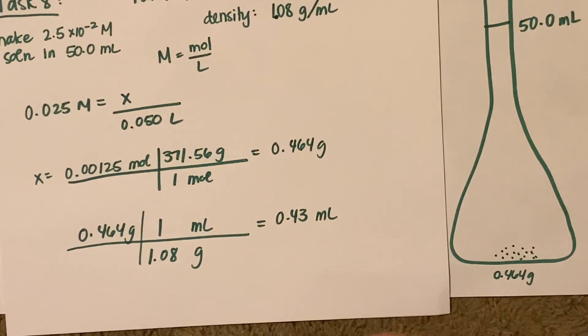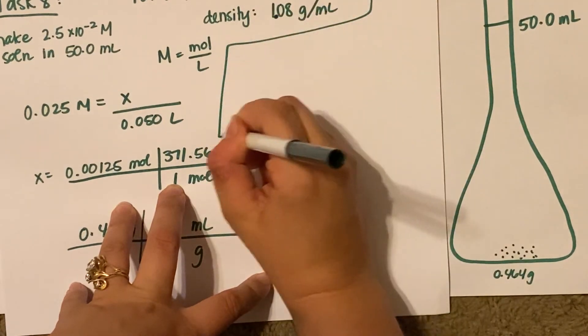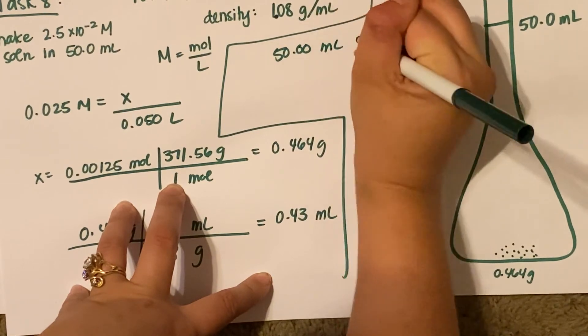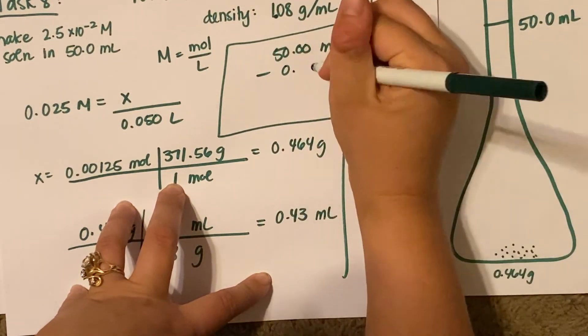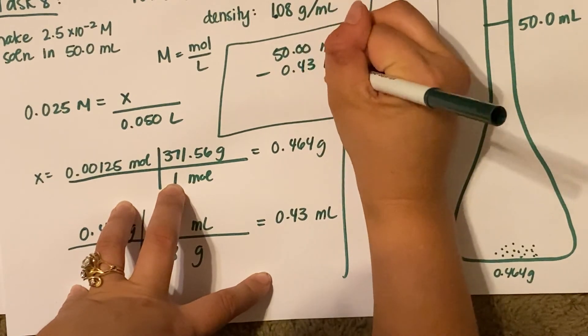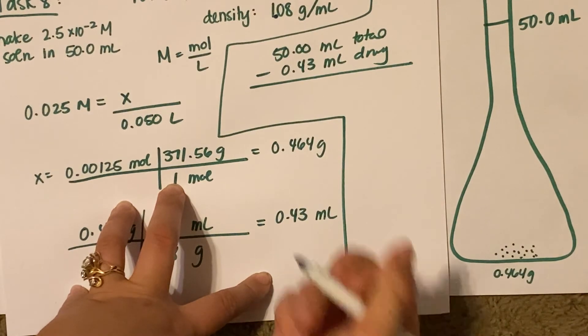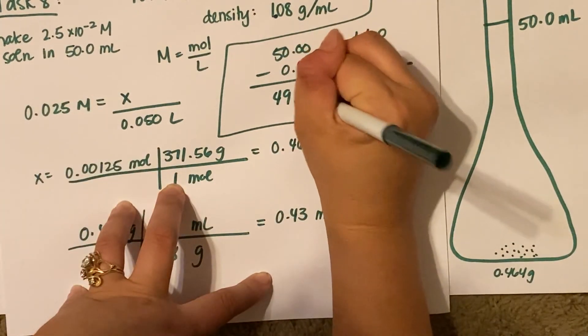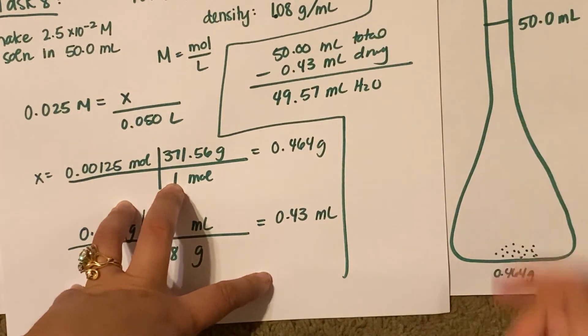Now the last step is to just do some subtraction. 50 mL is your total. You subtract out your 0.43 mL for your drug, and you'll find that you need to add exactly 49.57 mL of water to your volumetric flask.